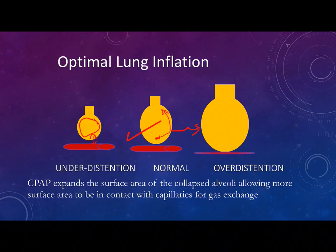However, if we increase pressure to a very high limit, it creates pressure over the pulmonary vessels, decreasing pulmonary venous return, which then reduces cardiac output. So be cautious and use the proper pressure for each disease.